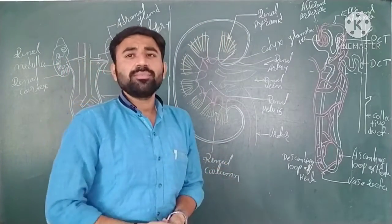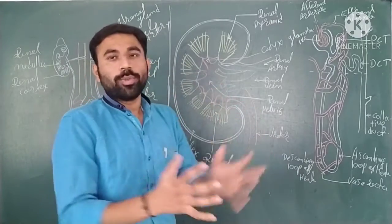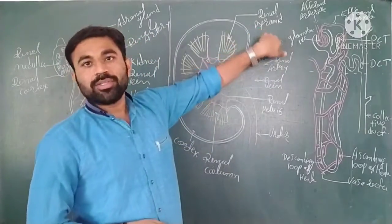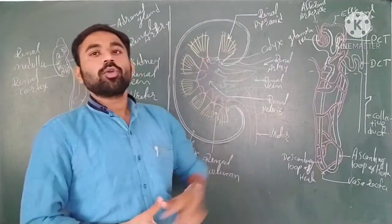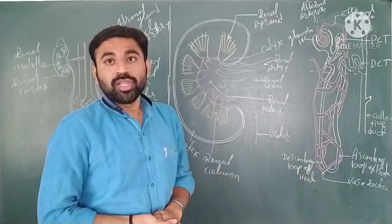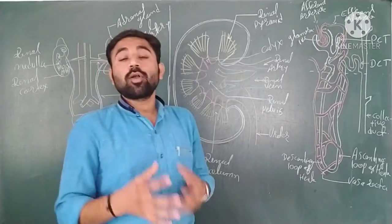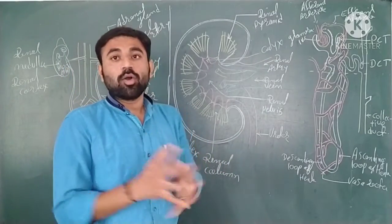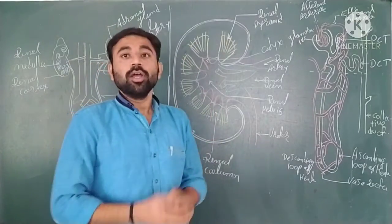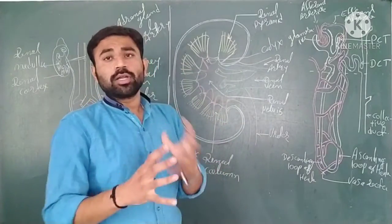In the renal medulla there are many renal pyramids arranged in a particular manner. Between two renal pyramids there is a renal column, and these columns are known as the columns of Bertini. These columns of Bertini are present in the medullary region of the kidney.